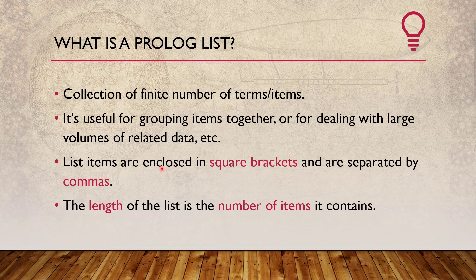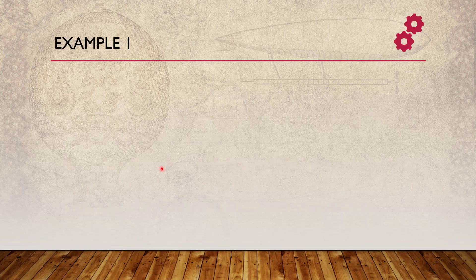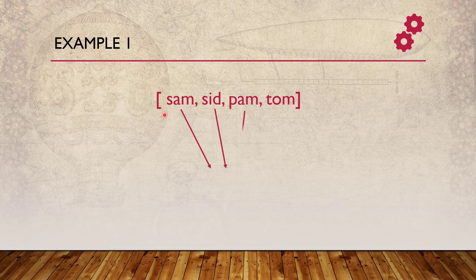Let us take certain examples to understand what a Prolog list can contain. In this first simple example, every item in the list is an atom — we talked about atoms before in this playlist. These atoms are separated by commas and defined within square brackets. What would be the length of this particular list? Counting: 1, 2, 3, 4 — so the length is 4. We have 4 atoms in this list.